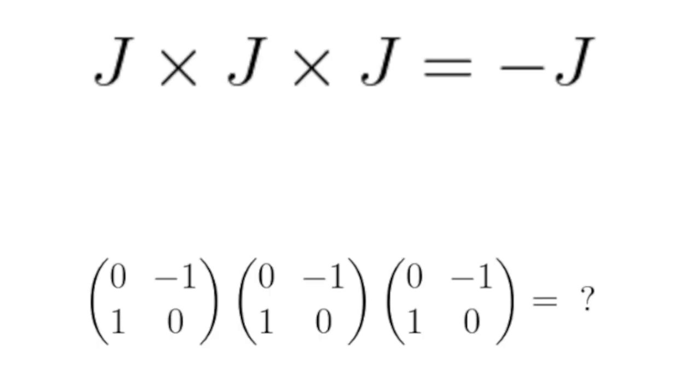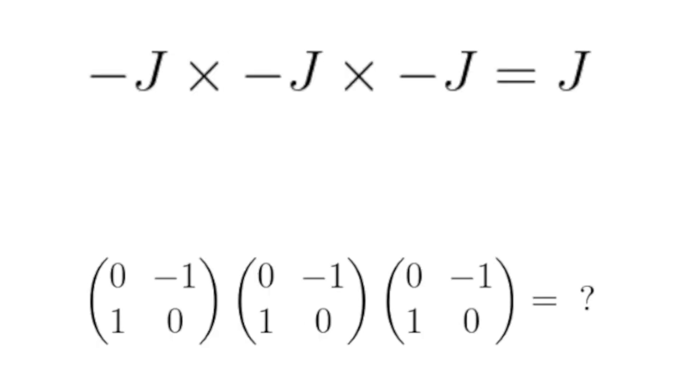J times J times J is negative J. Negative J times negative J times negative J is J.